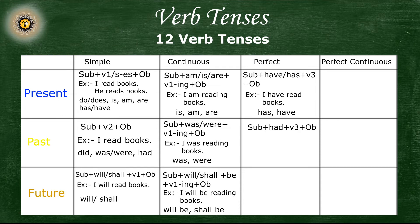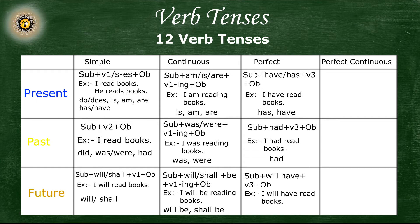Now, past perfect tense — the sentence structure for this tense is: subject plus had plus third form of the verb plus object. The example sentence for this tense is: 'I had read books'. Now, future perfect tense — the sentence structure is: subject plus will have plus third form of the verb plus object. The example sentence is: 'I will have read books'.